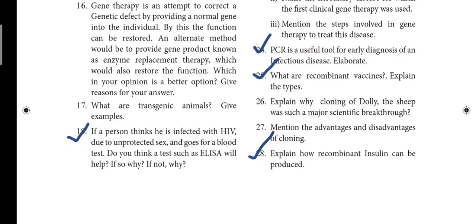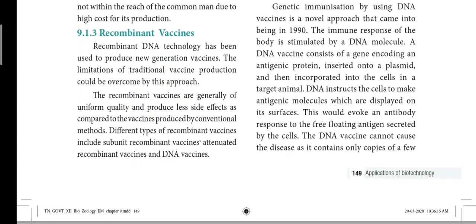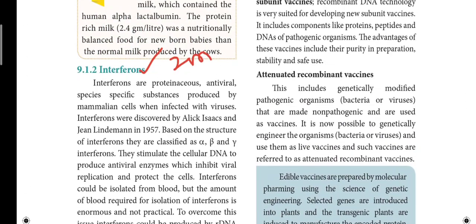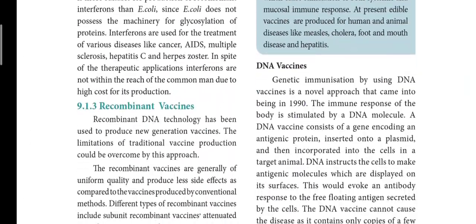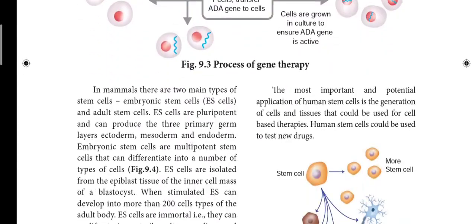Now for the book-inside of Lesson 9, page number 149 has the definition of RNA interference. This definition should be taken directly from the book. It is not included in the glossary at the last page of the lesson, so copy it directly from the lesson. The answer for RNA interference should be written according to the book inside, from page number 149.